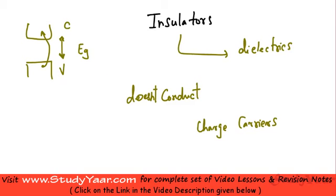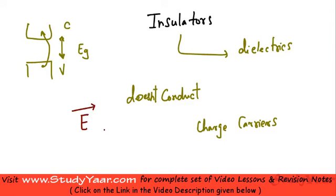However, if you apply a large amount of electric field, then the electrons are indeed going to be able to cross into the conduction band. When that large amount of energy is available in terms of electric field, these electrons break free.